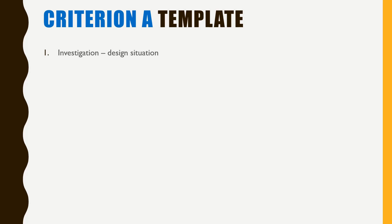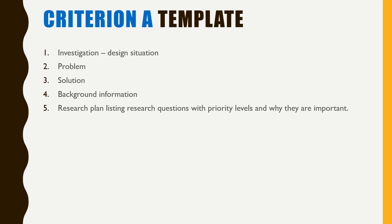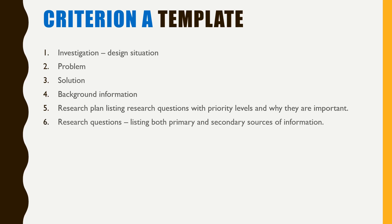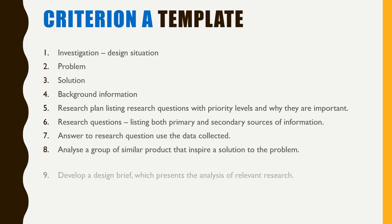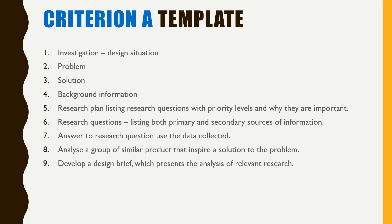To summarize: follow the template — investigate the design situation for strand one, which is the problem and the solution with background information. Strand two is the research plan with research questions, priority levels, and answers using both primary and secondary sources. Then analyze similar products, develop a design brief presenting your research analysis, and include a bibliography at the end. Thank you very much — if you have any more questions about Criterion A, please send an email or see me in class.